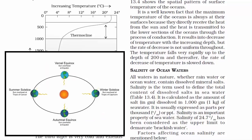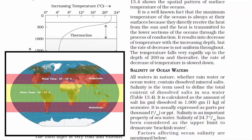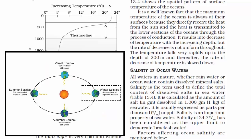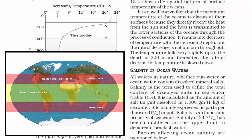During summer solstice, the Northern Hemisphere is tilted towards the sun, so it receives more sun rays, giving the mid-latitudes of the Northern Hemisphere their summer season. During this time, the top layer of ocean water at the middle latitude of the Northern Hemisphere is between 20 and 25 degrees Celsius. Similarly, during winter solstice, the Southern Hemisphere is exposed more to sun rays, and the top layer at the mid-latitude of the Southern Hemisphere reaches 20 to 25 degrees Celsius.